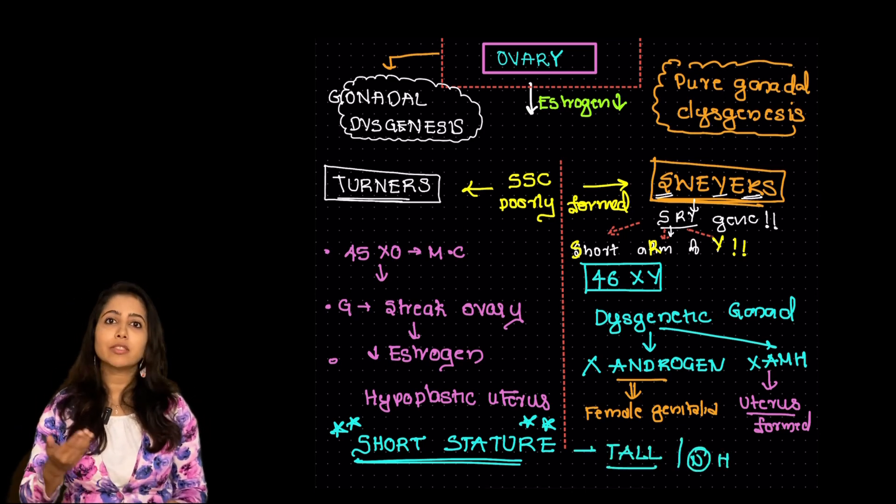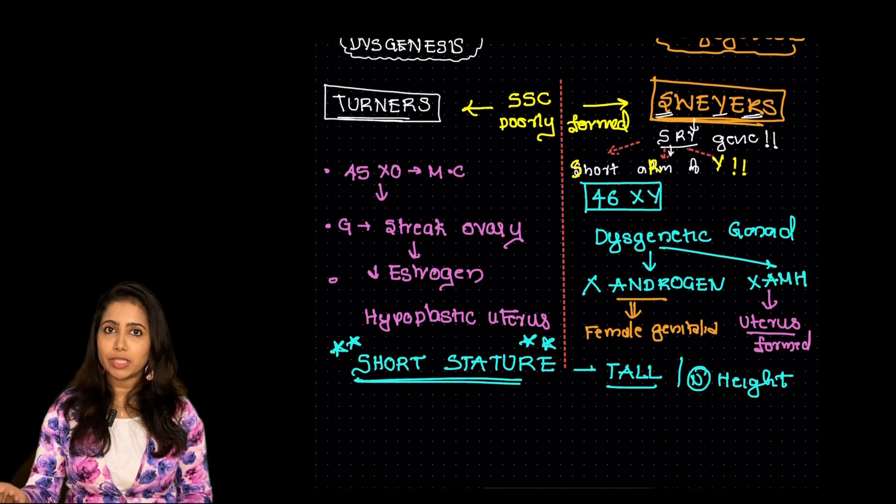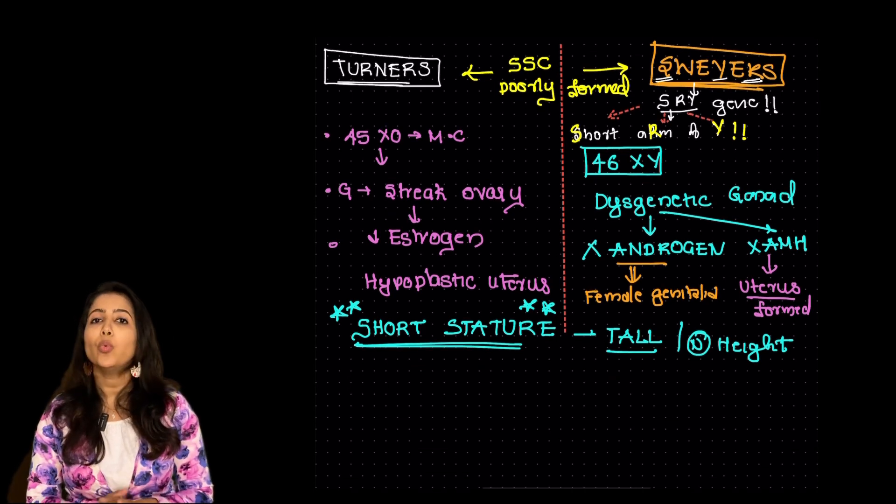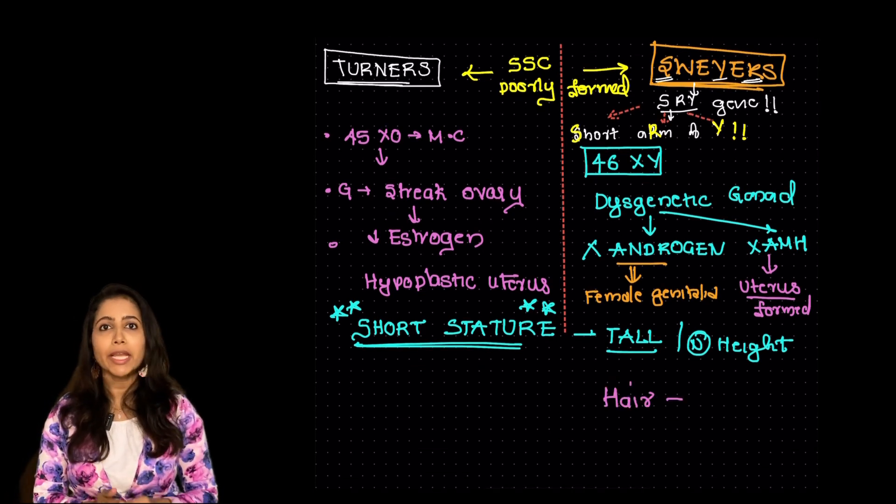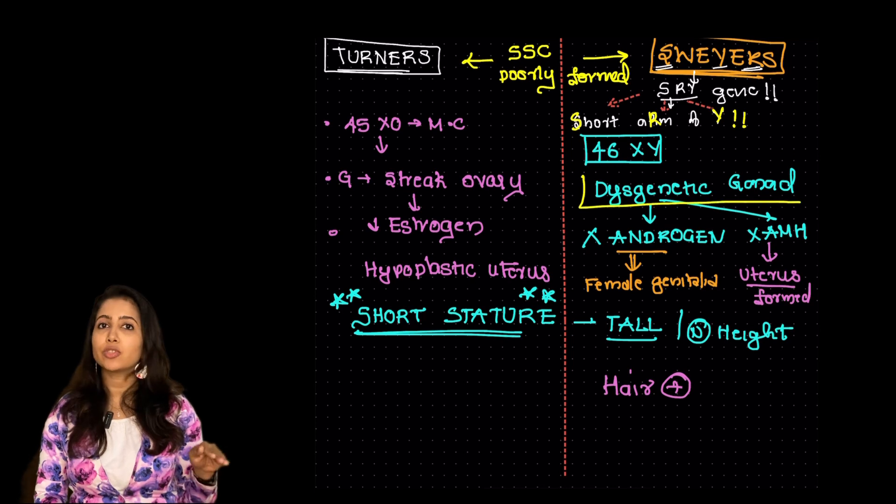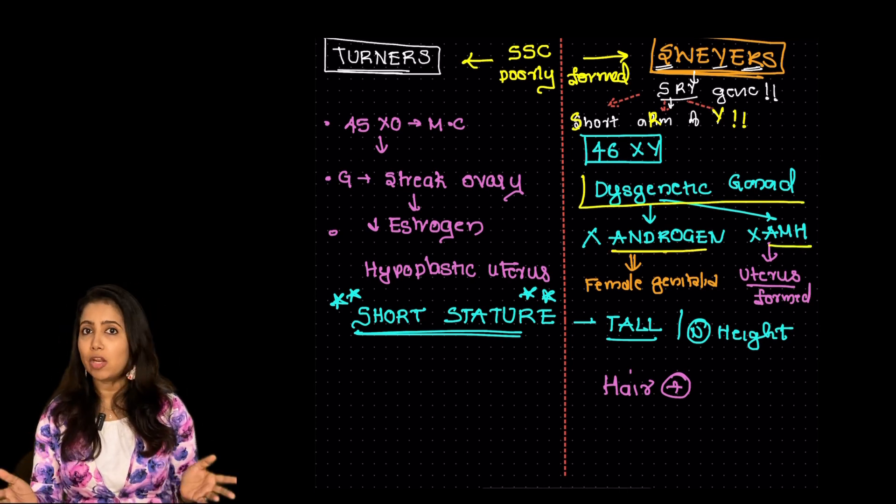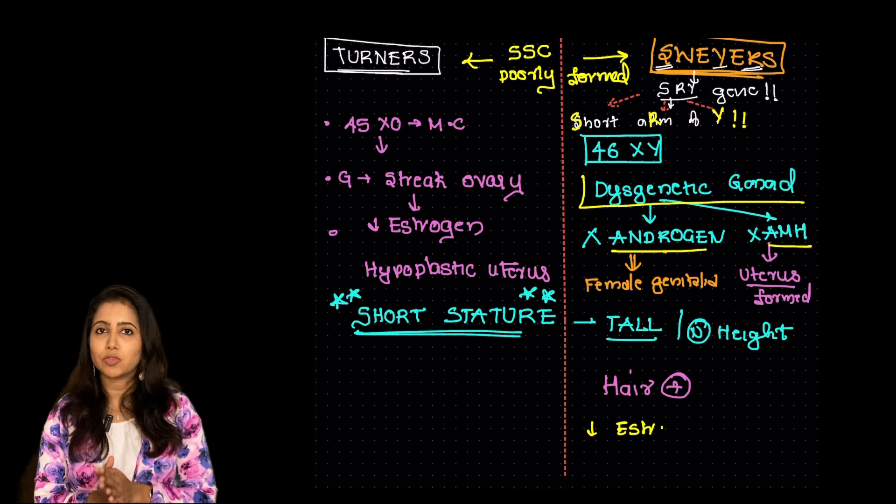Once the woman reaches the puberty from the adrenals the androgen is released which is responsible for the hair growth as well. Androgen is low, the gonads are dysgenetic, the level of estrogen is low as well.